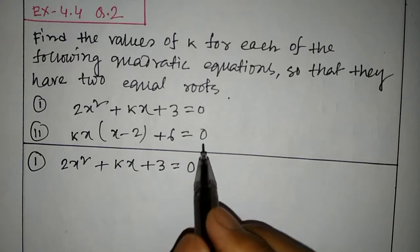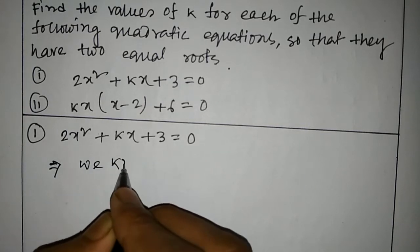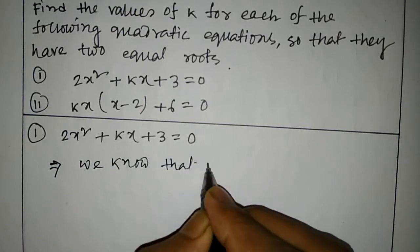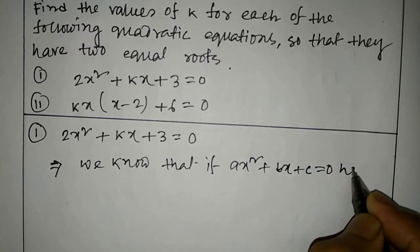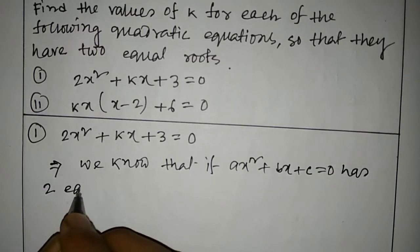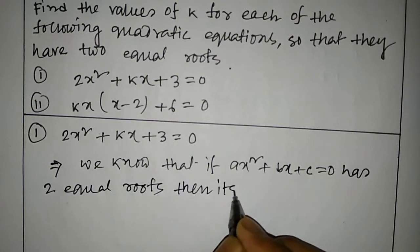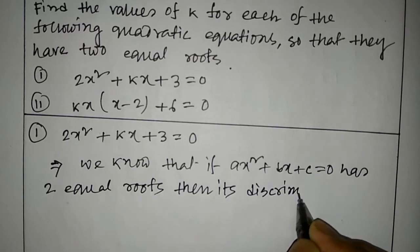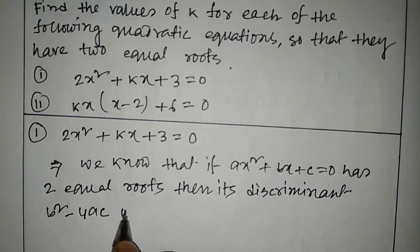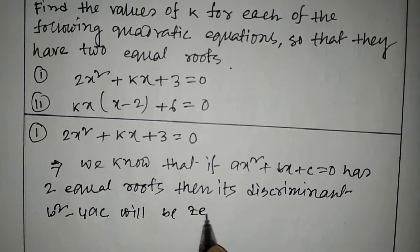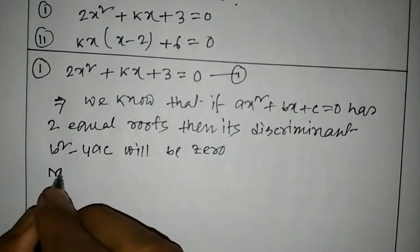And question number 2: kx(x minus 2) plus 6 equals 0. We know that if ax squared plus bx plus c equals 0 has two equal roots, then its discriminant b squared minus 4ac will be 0.